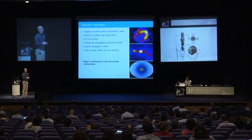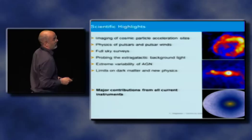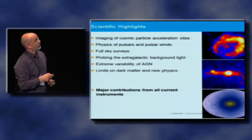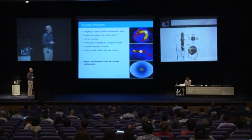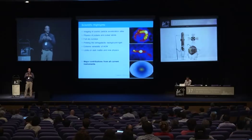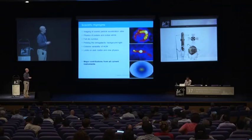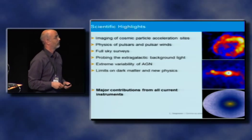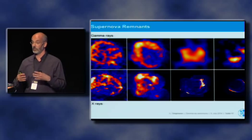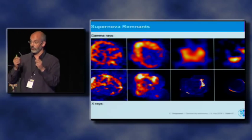What concerns scientific highlights — we have made big progress in imaging of cosmic particle accelerator sites. We do a lot of physics with pulsars and pulsar wind nebulae, which are the relativistic environments around pulsars. There are whole-sky surveys, probing extragalactic background light, extreme variability in active galactic nuclei, connection to worldwide alert systems, and limits on dark matter. But let me start with supernova remnants, which was one of the prime motivations for gamma-ray astronomy — to identify the sources of galactic cosmic rays.